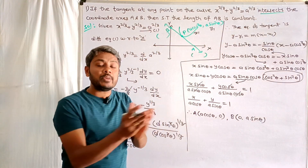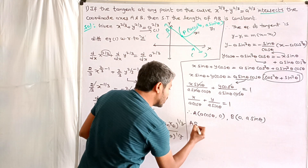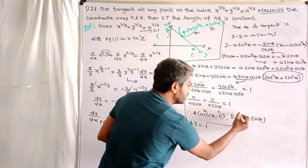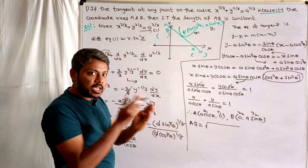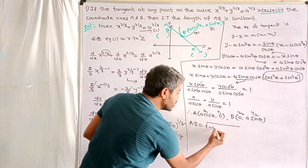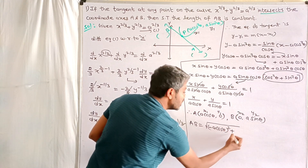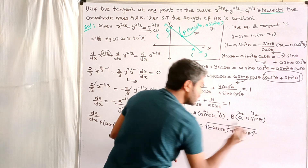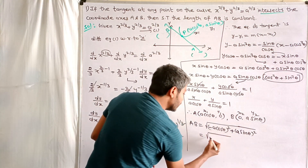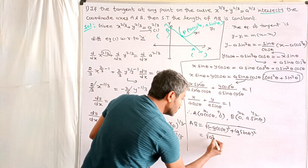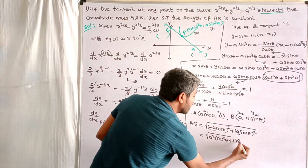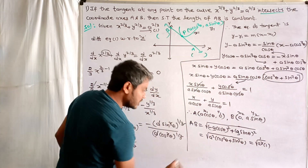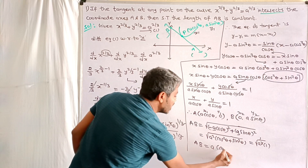Now find the distance AB using the distance formula: AB = √[(0 - a cosθ)² + (a sinθ - 0)²] = √[a² cos²θ + a² sin²θ] = √[a²(cos²θ + sin²θ)] = √(a²) = a. Therefore AB equals a, which is a constant.